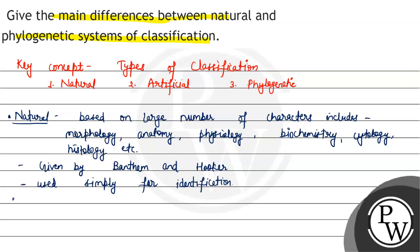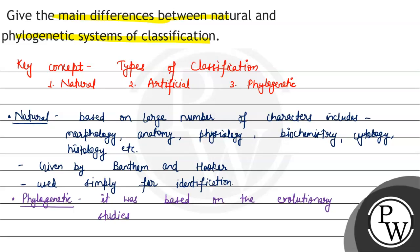Now let's talk about phylogenetic classification. Phylogenetic is the study of evolutionary history. This classification was based on evolutionary studies and evolutionary relationships. It was given by Ernst Haeckel.